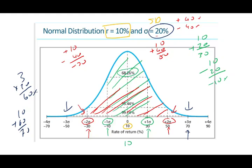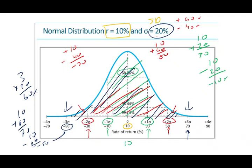And at the negative end, 10 minus 60 gives us negative 50%. So within three standard deviations we go from negative 50% to positive 70%, encompassing 99% of all possible returns. Basically, once we reach three standard deviations, we include essentially all possible returns. This is what we are saying.